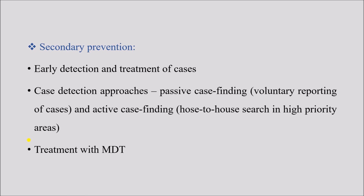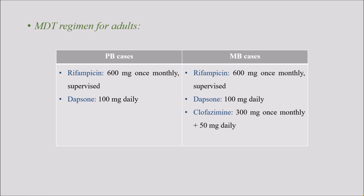Next is secondary prevention — the disease has already taken place, so we must detect cases as early as possible and start treatment promptly. Case detection approaches can be either passive or active. Passive case finding involves voluntary reporting, when patients with complaints come to the hospital and are diagnosed. Active case finding involves house-to-house visits in high-priority areas. Treatment is with multi-drug therapy.